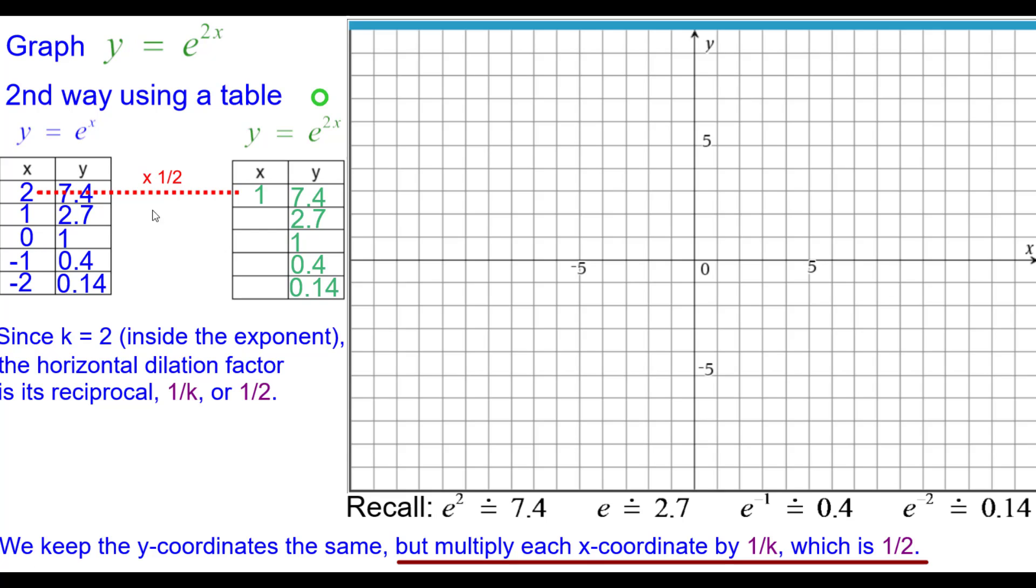So 2 times 1 half is 1, so we'll plot 1, 7.4. 1 half times 1 is 1 half, so 1 half comma 2.7. And go ahead and finish the table and plot the points. Press pause and then resume when you're ready.